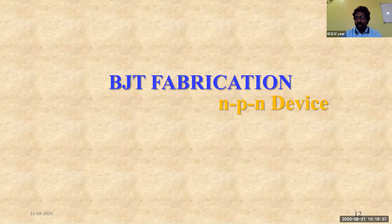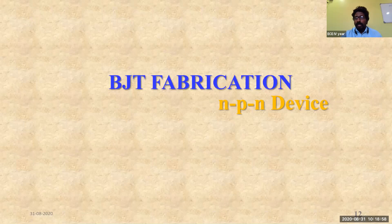BJT is nothing else but a bipolar PN junction device. It has two PN junction diodes connected back to back. There are two kinds of BJT: the NPN BJT and also the PNP BJT. These are the two major types of BJT.